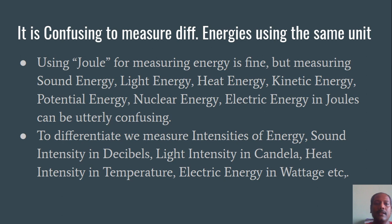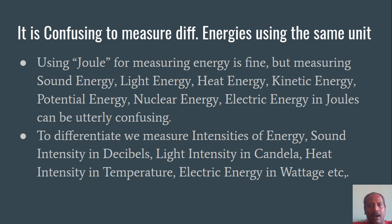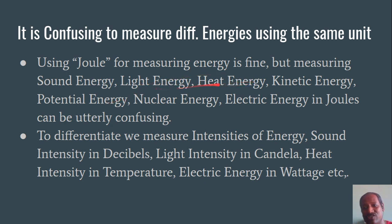Now this is an important slide I have added — it is not in the textbook. It is confusing to measure different energies using the same unit. If I say I have 10 joules of energy, you would not know whether it is light energy, heat energy, sound energy, or whatever. Energy is like a big umbrella under which all various forms of energy exist. Using joules for measuring energy is fine, but measuring sound energy, light energy, heat energy, kinetic energy, potential energy, and nuclear energy all in joules can be utterly confusing.